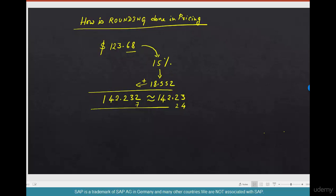And that's the concept behind rounding. Now, which condition type should be rounded, how it should be rounded—all this stuff can be controlled at the pricing procedure level.